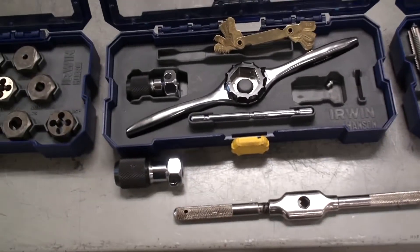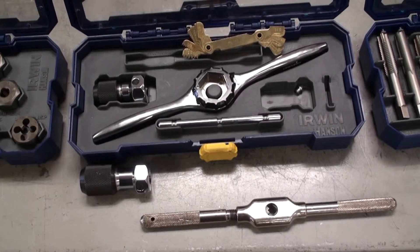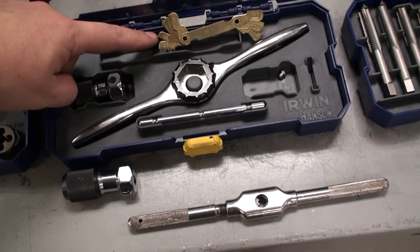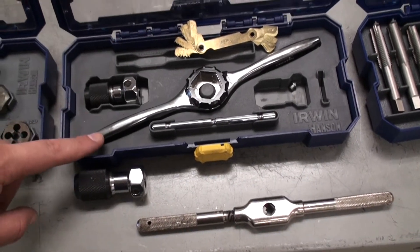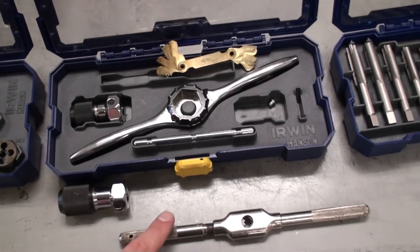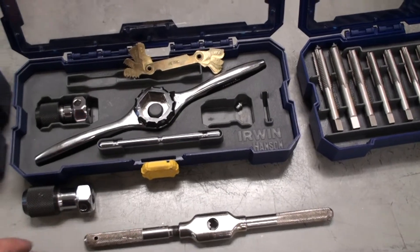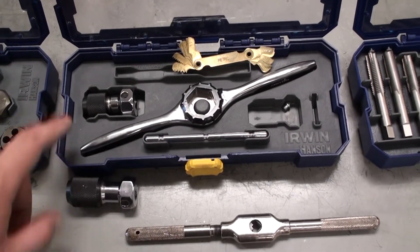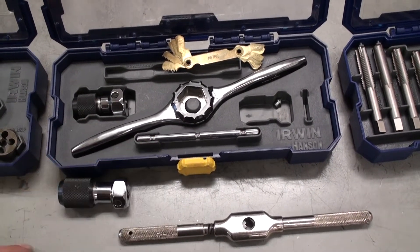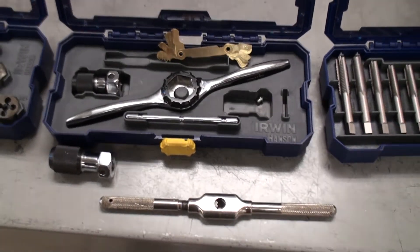In the middle here we have the other tools we will need when using taps and dies. We have a thread pitch measuring tool, a handle for the dies, and a handle for the taps. There's also a secondary smaller handle that we can use for taps. We're going to learn how to use all these tools in just a moment.